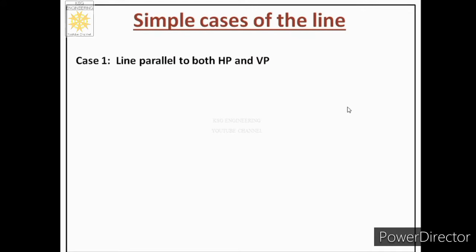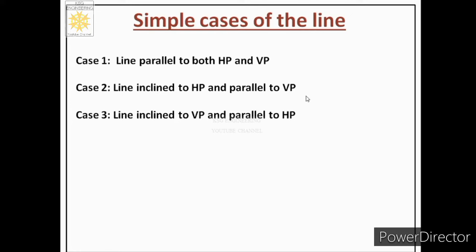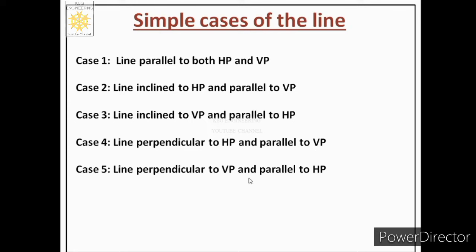Now we will discuss the five cases of lines covered in our syllabus. Case 1: line parallel to both HP and VP. Case 2: line inclined to HP and parallel to VP. Case 3: line inclined to VP and parallel to HP. Case 4: line perpendicular to HP and parallel to VP. Case 5: line perpendicular to VP and parallel to HP. We will see each case in detail, understanding the situation, obtaining different views, and plotting on paper.